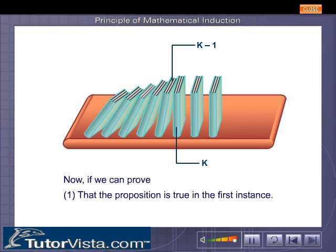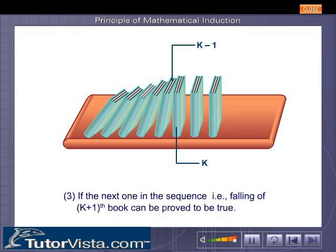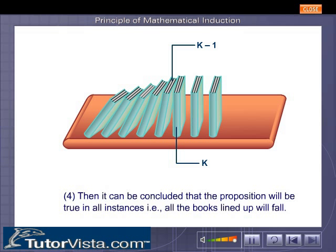Now, if we can prove that the proposition is true in the first instance, if a given instance is true, if the next one in the sequence—that is, falling of the (K+1)th book—can be proved to be true, then it can be concluded that the proposition will be true in all instances.